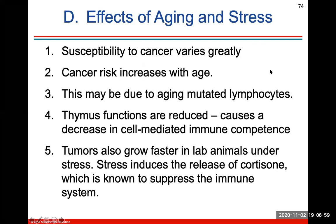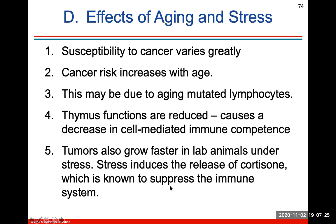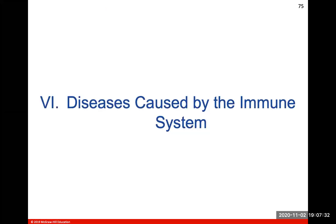Effects of aging and stress: susceptibility to cancer varies greatly with aging and stress. Cancer risk increases with age, possibly due to lymphocytes mutating with age. Thymus function is also reduced, causing a decrease in cell-mediated immune competence. Tumors also grow faster in lab animals under stress. Stress will induce the release of cortisol, which is known to suppress the immune system.